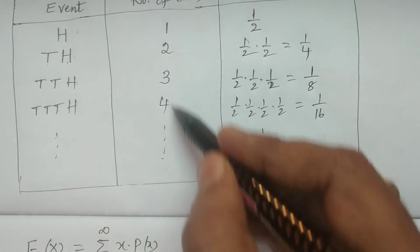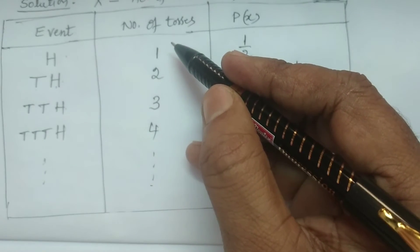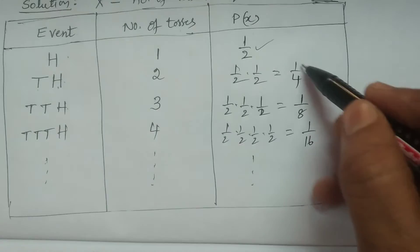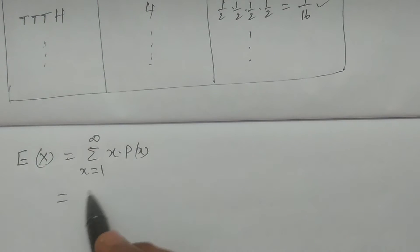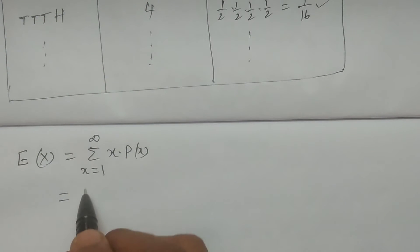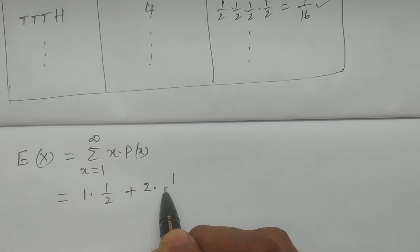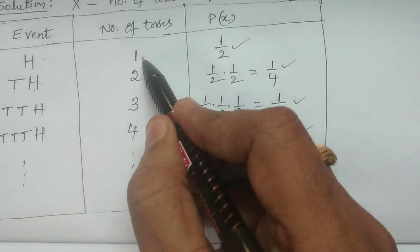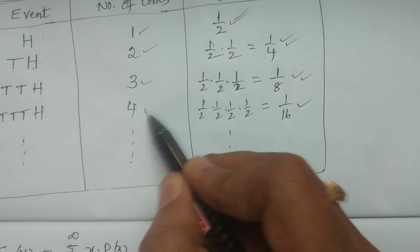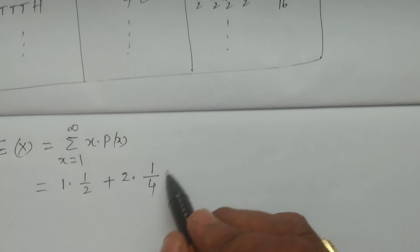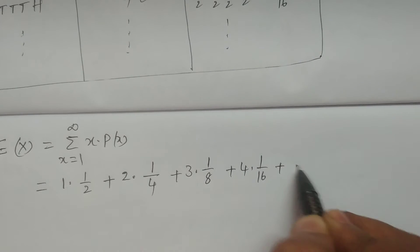Observing the values: x = 1, 2, 3, 4, and so on. The probabilities are 1/2, 1/4, 1/8, 1/16, etc. So E(X) = 1×(1/2) + 2×(1/4) + 3×(1/8) + 4×(1/16) + and so on.